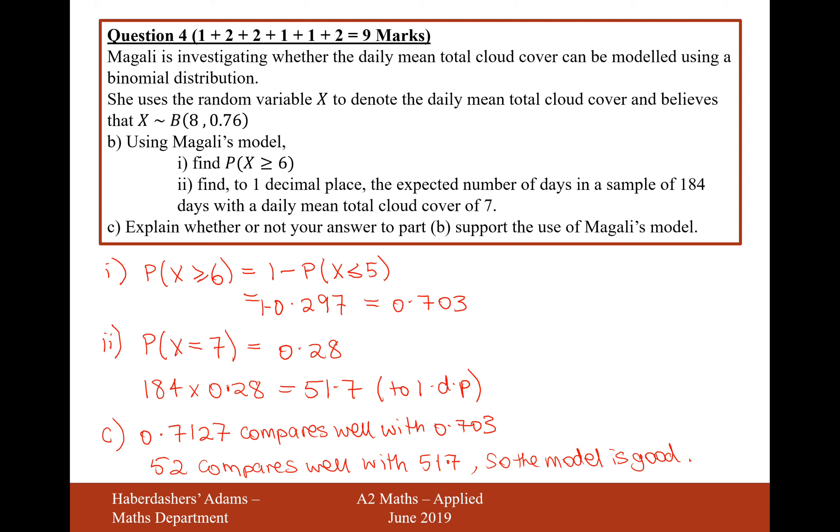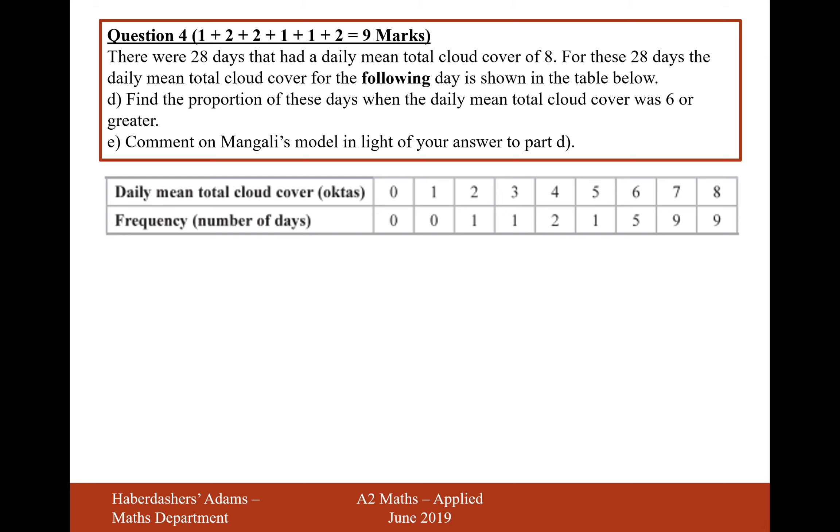Okay, so there we are, that's our answer to part c. Let's move on to the next set of questions. So there are 28 days that had a daily mean total cloud cover of 8. For these 28 days, so this is all the data for the amount of days that had 8 octaves the day before, so the 28 days, the daily mean total cloud cover for the following day is shown in the table below. So this is the number of octaves in all of the 28 days after there was 8 octaves in the day before.